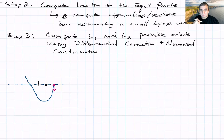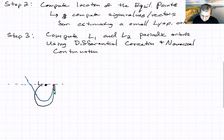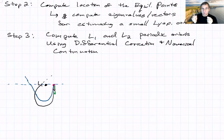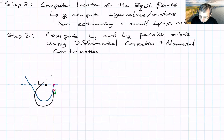Once it hits the x-axis, we can do differential correction, which slightly changes the initial condition — keeping x fixed and adjusting the velocity. We try that initial condition until it hits the x-axis perpendicularly. That perpendicular crossing condition comes from a symmetry in the three-body problem. We keep adjusting until finally we get something that really does cross perpendicularly, and then the other half of the orbit comes from symmetry.